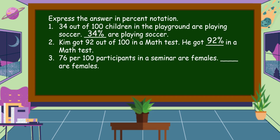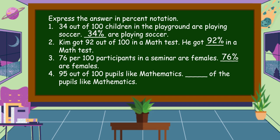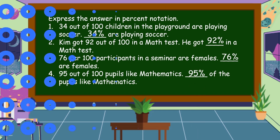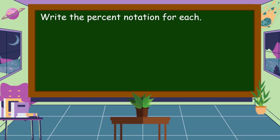Next: 76 per 100 participants in a seminar are females. In percent notation the answer is 76 percent. Next one: 95 out of 100 pupils like mathematics. The correct answer is 95 percent. Now write the percent notation for each of the following.